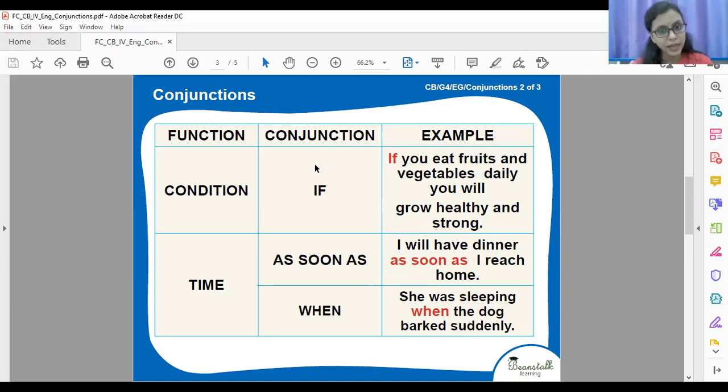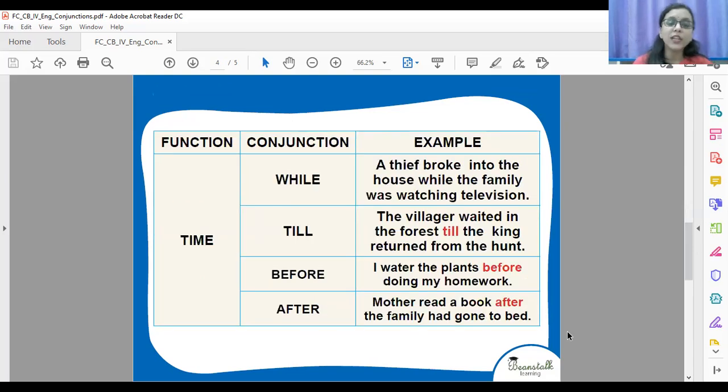Look at the next two. As soon as and when. These two words are used to indicate time. See the sentences? I will have dinner as soon as I reach home. So what is the time of my dinner? When I reach home. She was sleeping when the dog barked suddenly. When did the dog bark? When she was sleeping. At that time when she was sleeping. So as soon as and when indicate time.